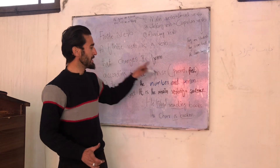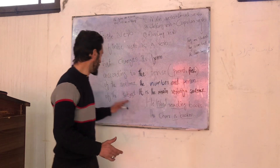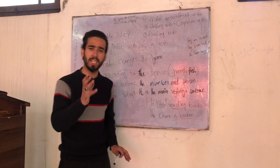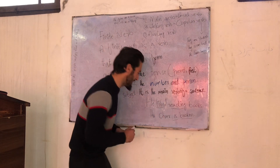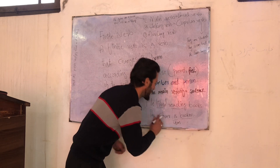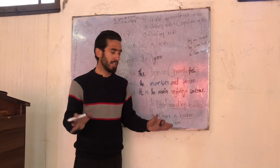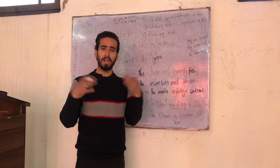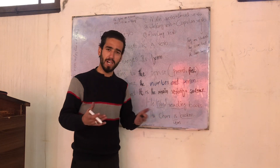Tense — past or present — and the number and person of the subject change. For example: 'he likes' — the verb changes. Another example: 'The chain is broken.' Here, 'was broken' — what is the finite verb? It is 'was.' The main verb changes according to tense, and 'broken' is not the finite verb.